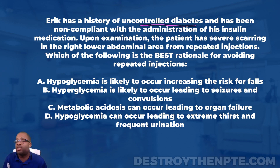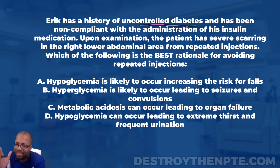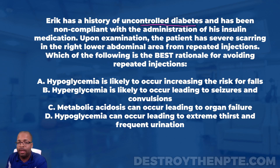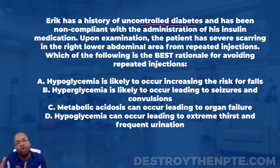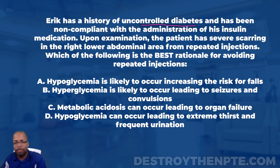The question says the patient has uncontrolled diabetes — it doesn't specify type 1 or type 2. From a common perspective, we're likely dealing with type 2. However, on your NPTE, if it says 'uncontrolled diabetes' and there's no extra information in the question to infer the type, don't overthink it. It means you don't need to know that in order to answer the question.